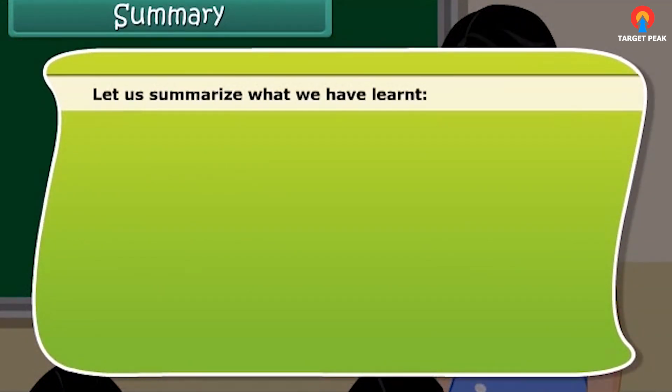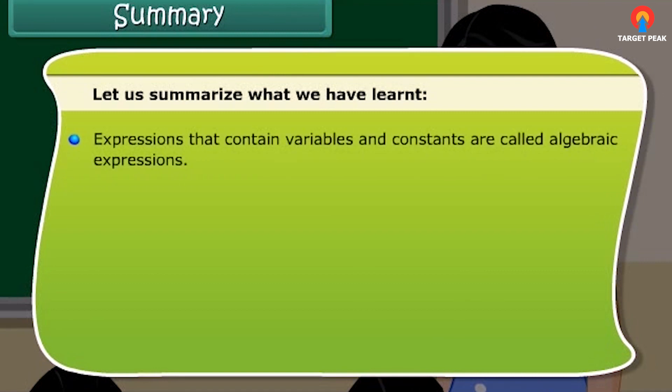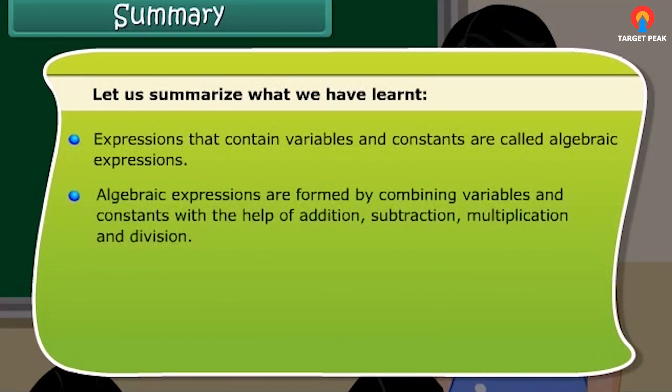Let us summarize what we have learnt. Expressions that contain variables and constants are called algebraic expressions. Algebraic expressions are formed by combining variables and constants with the help of addition, subtraction, multiplication and division.